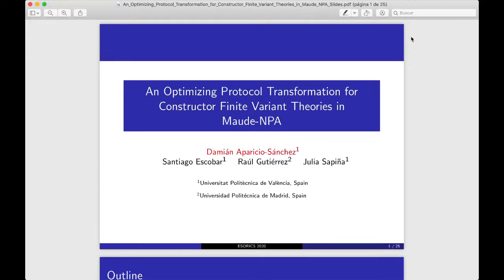In this talk, we present an optimized protocol transformation that can fix these problems, allowing us to simplify the protocol specification of the property we want to verify, and make it possible to analyze the protocol because the state space has been reduced. This protocol transformation is shown on theories that satisfy the constructor-finite variant property. However, we will show you a group of interesting cryptographic protocols that satisfy these properties.